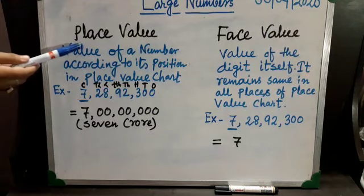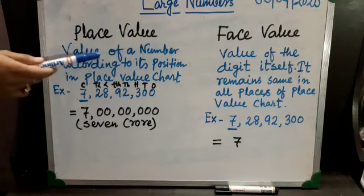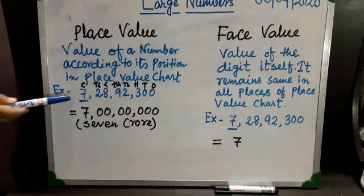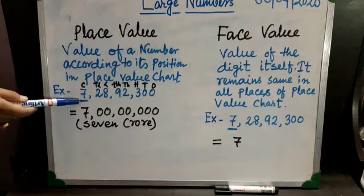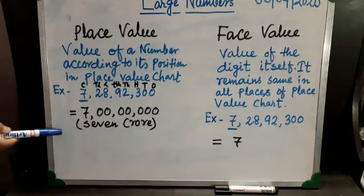Now we are going to learn about the place value and face value of a digit. Though place value and face value almost sound the same, their meaning is very very different. Place value means the value of a number according to its position in a place value chart. I have given you one example: seven crore, twenty eight lakh, ninety two thousand and three hundred seven. I have underlined certain digits whose place value you have to find. Seven is situated in the crore place, so the place value of seven is seven crore.